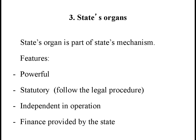A state organ is a part of the state mechanism, and it has some features. First, it must be powerful because it is established by the state and operates under the name of the state. Second, it is statutory, meaning it will follow the legal procedure. Third, the state organ is independent in operation — even though all state organs have internal relations, each state organ must be independent in working. Finally, the finance of the state organ is provided by the state because it supports working for the public in public areas, so it needs a budget, which is provided or supported by the state.